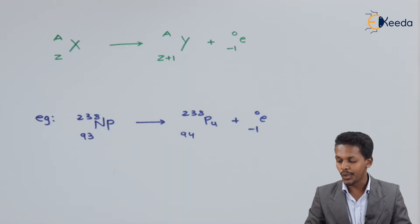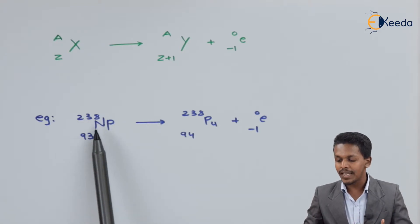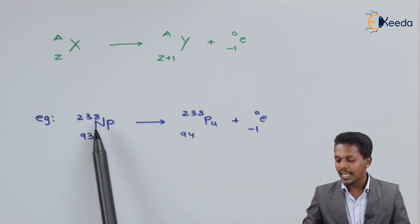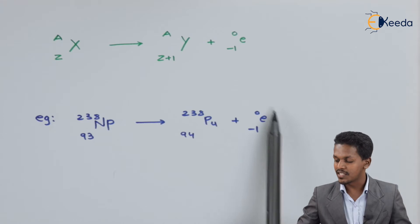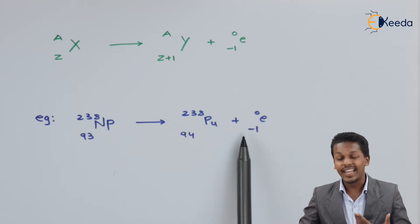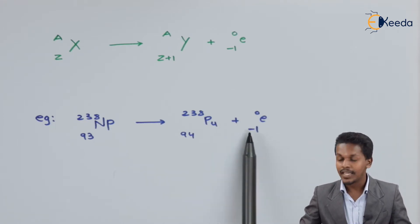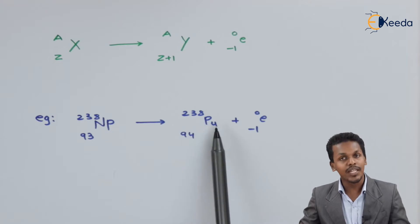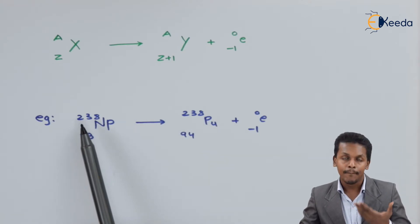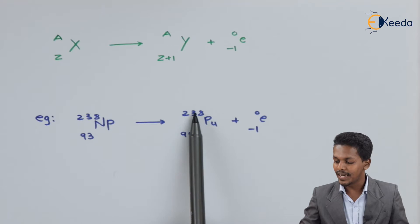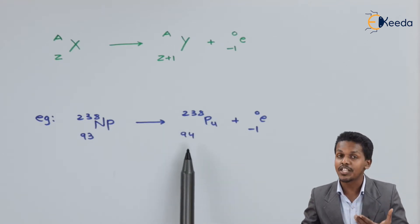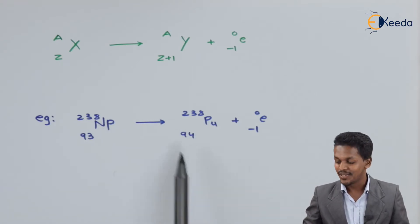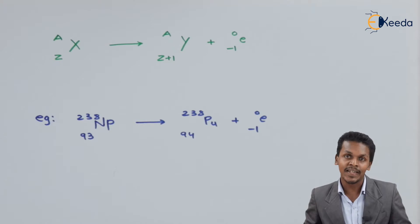For example, suppose we have Neptunium with atomic number 93 and atomic mass number 238. If it emits a beta particle — eliminating one negatively charged electron (charge minus 1) — the product formed is Plutonium with the same atomic mass number of 238, but the atomic number has changed by 1 unit, from Neptunium 93 to Plutonium 94. This is one example of beta decay.